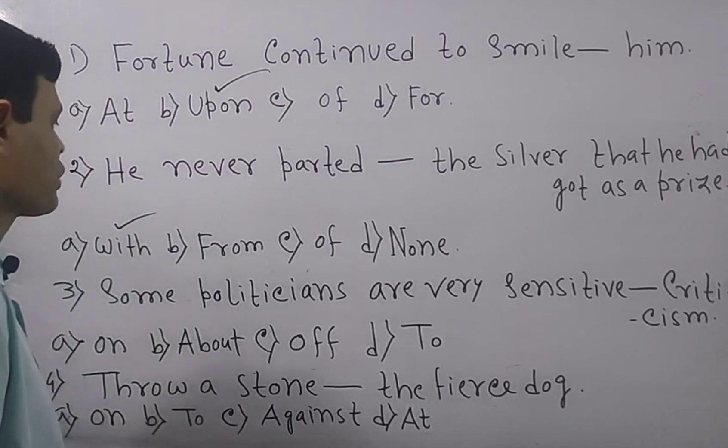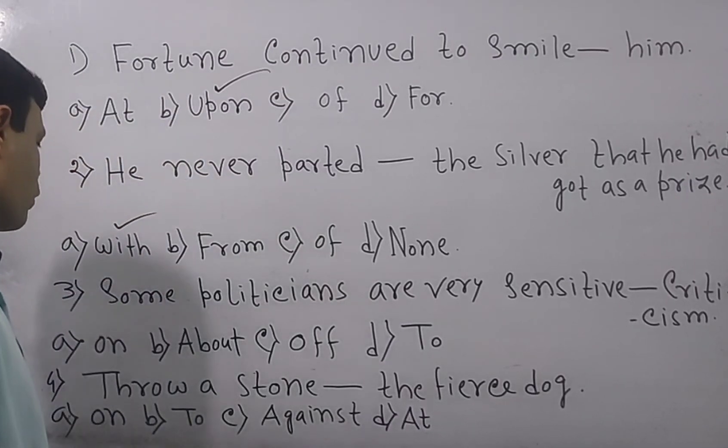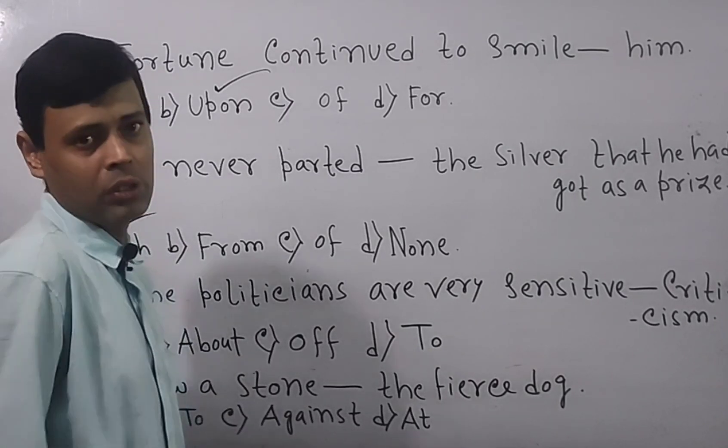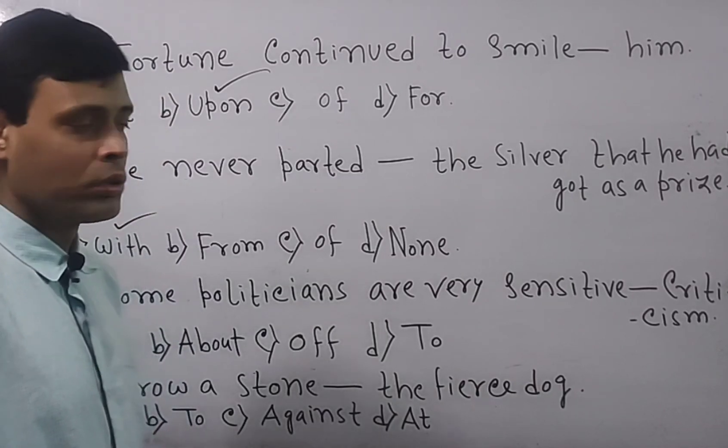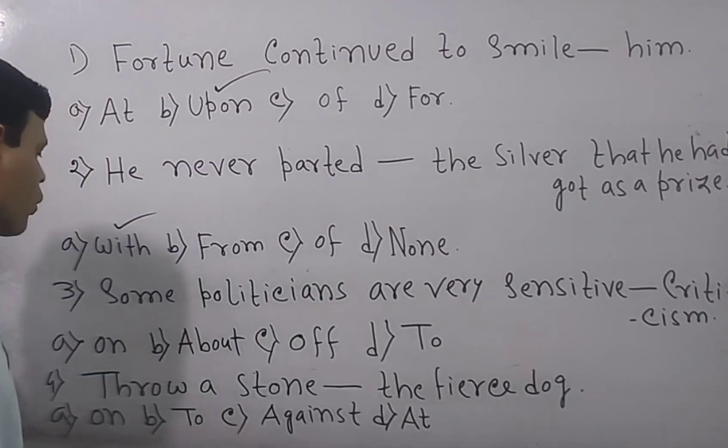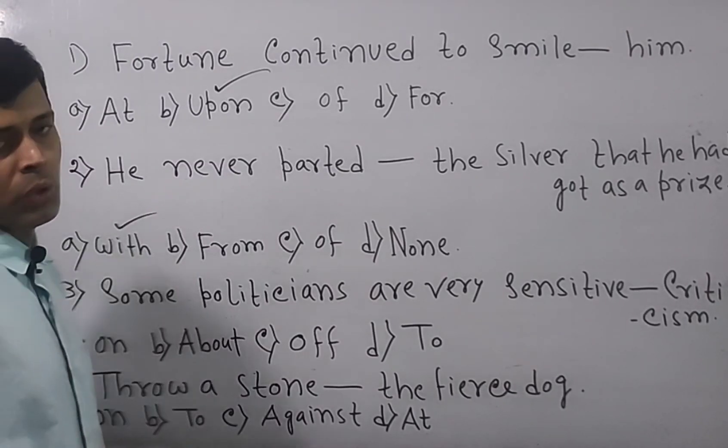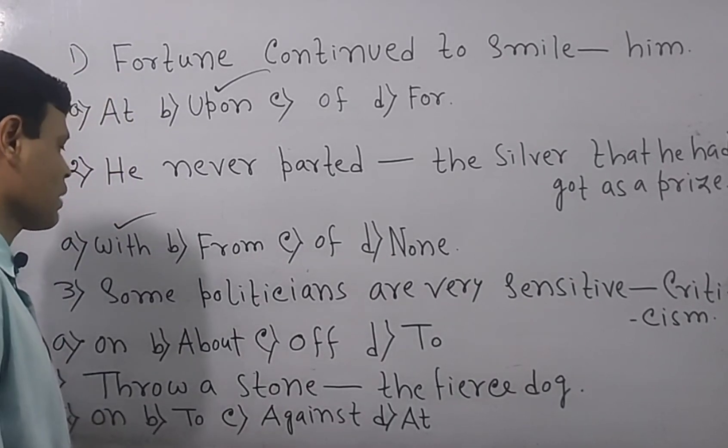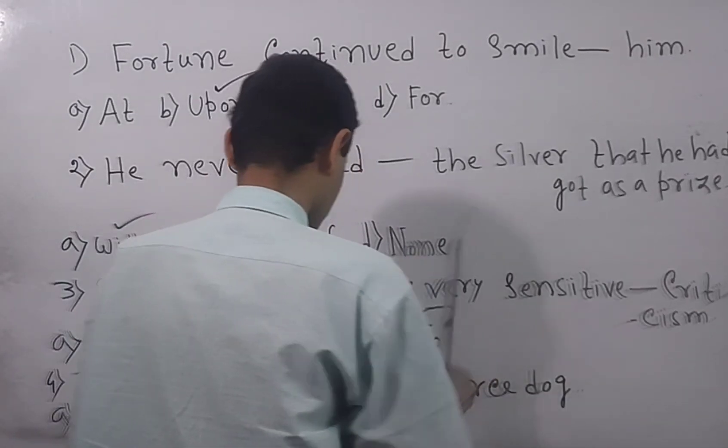Now go next. Some politicians are very sensitive dash criticism. Options are on, about, of, to. So whenever you are sensitive, you are showing some kind of attitude. And in English, to is called the preposition of attitude. So out of the four options on, about, of, to, the right answer is to as to is called the preposition of attitude. That means the overall answer is some politicians are very sensitive to criticism.